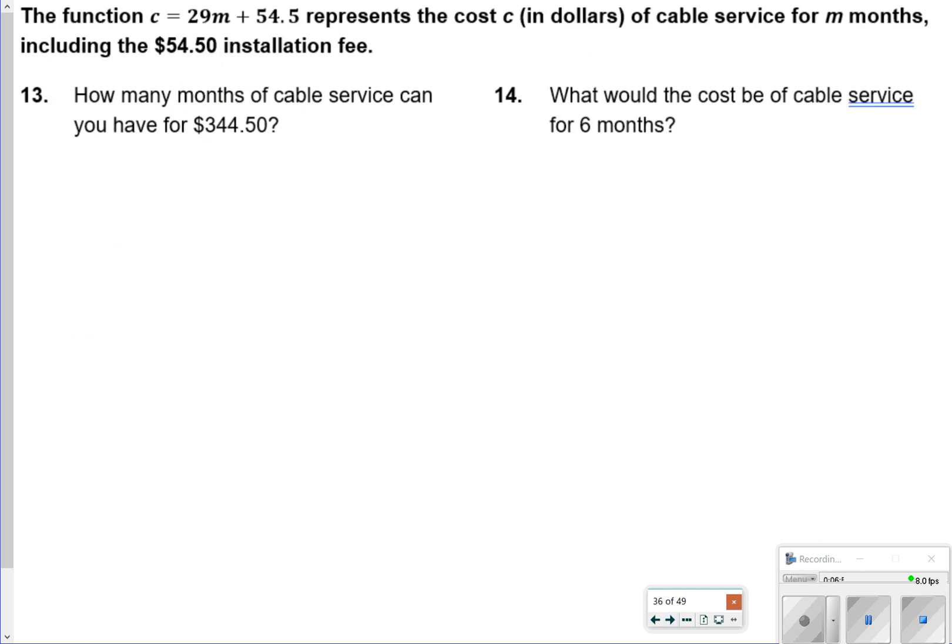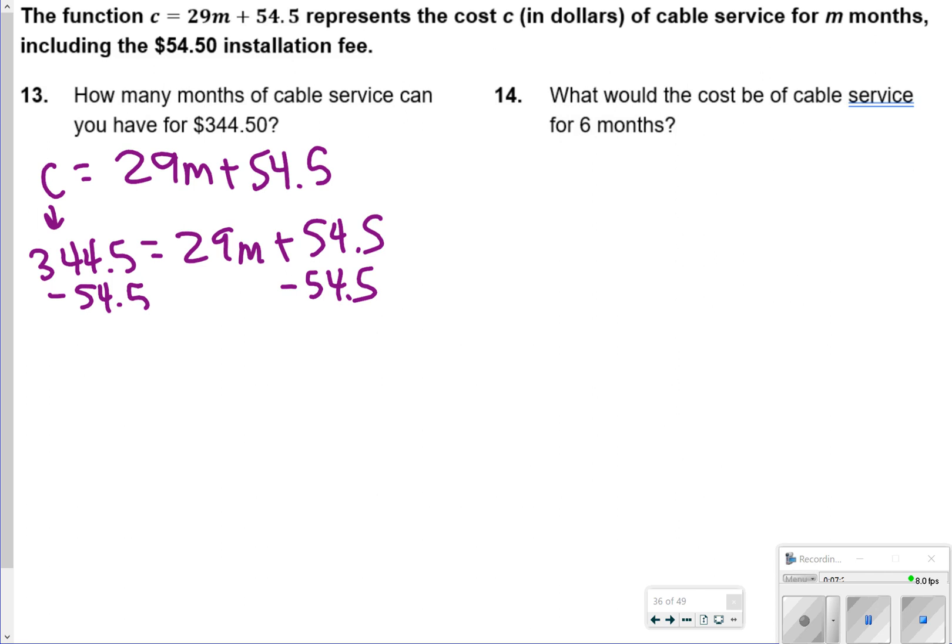For 13 and 14, you're basically plugging in these for your cost in dollars for m months. So what I'm essentially going to do is just write down my problem first. C is equal to 29m plus 54.50. And it says how many months of cable can be made if you have $344.50. So you're basically just replacing C with 344.50. And then equals 29m plus 54.50. First, I'm going to subtract both sides by 54.50, and that's going to give me 290 is equal to 29m. And then you're just going to divide both sides by 29. So m is equal to 10. So that would be 10 months.